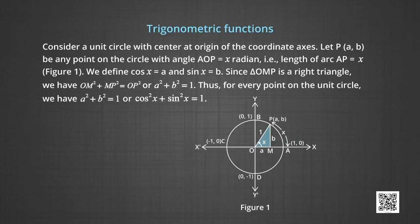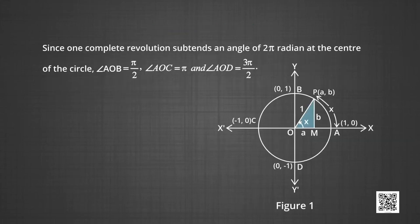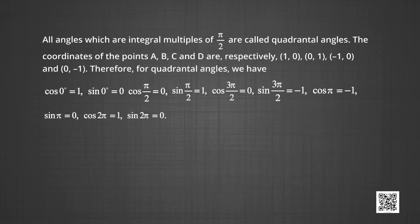Thus, for every point on a unit circle, we have A² + B² = 1, which can also be stated as cos²x + sin²x = 1. Since one complete revolution subtends an angle of 2π radians at the center of the circle, angle AOB is π/2, angle AOC is π, and angle AOD is 3π/2. All angles which are integral multiples of π/2 are called quadrantal angles.